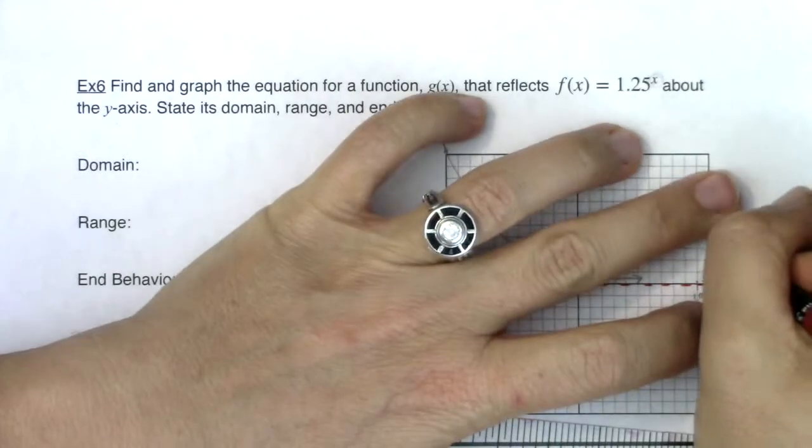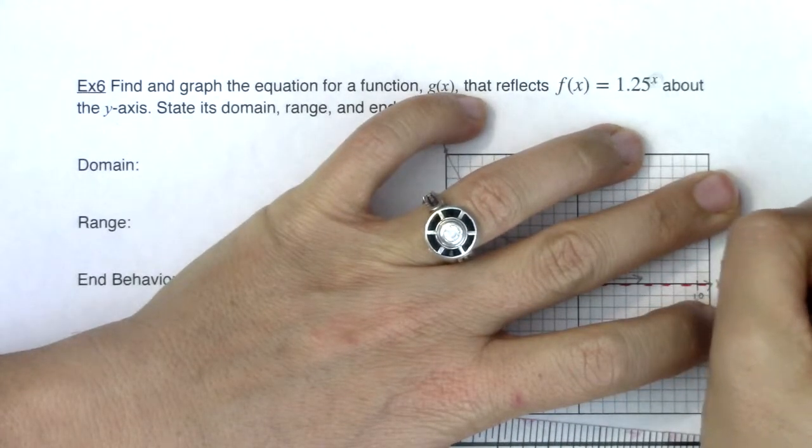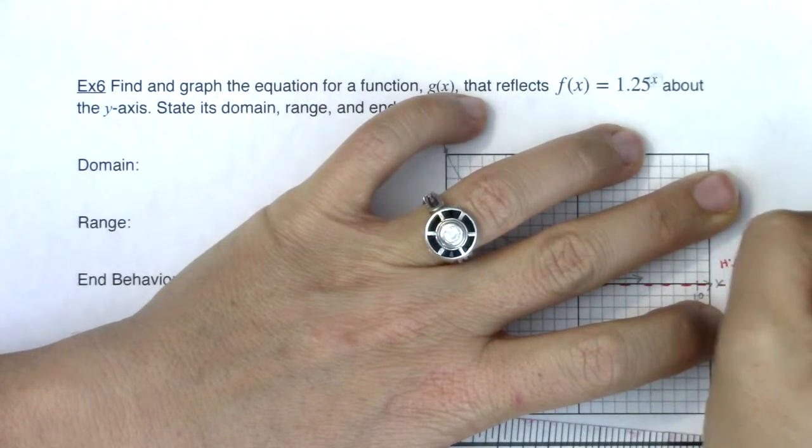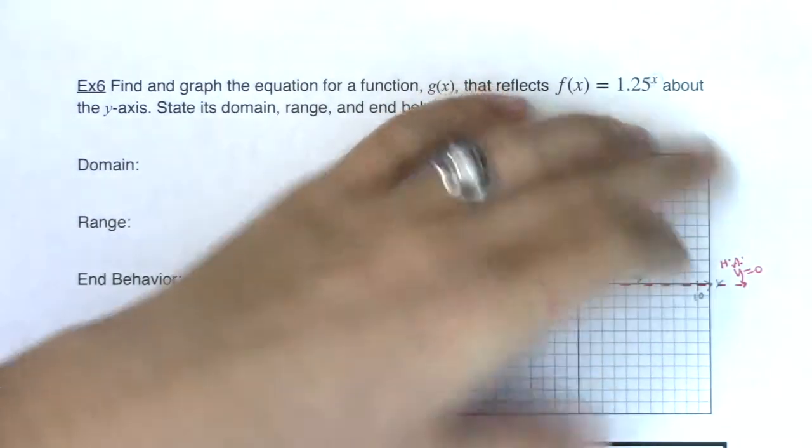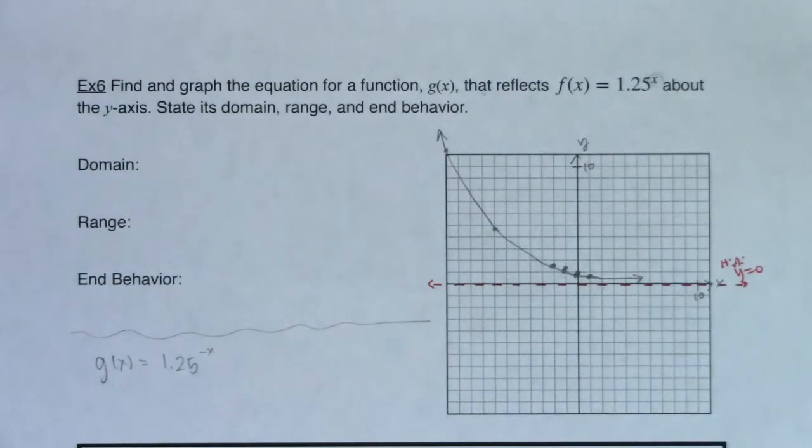I've got my horizontal asymptote. So let's start to talk about domain, range, and my end behavior.